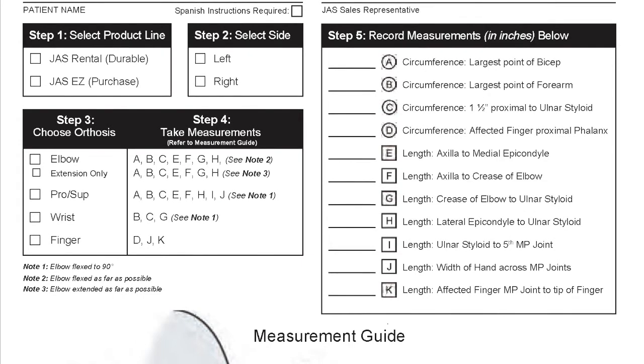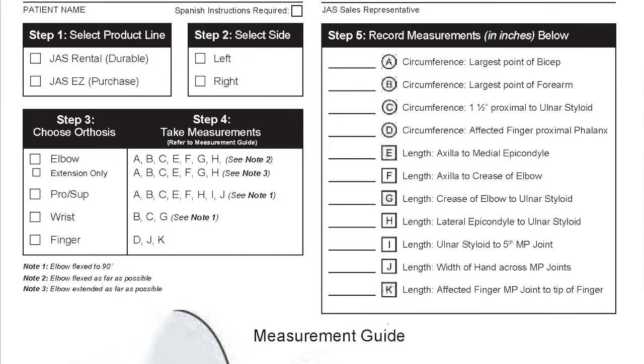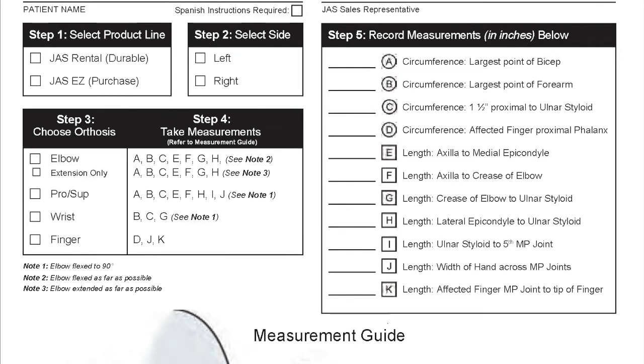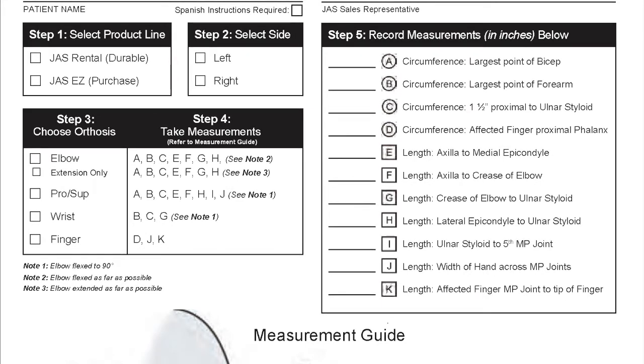The Step 4 box indicates the set of measurements required for that specific orthosis. The JAZZ elbow requires measurements A, B, C, E, F, G, and H.